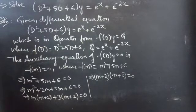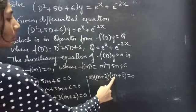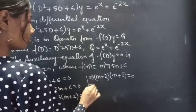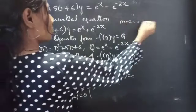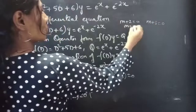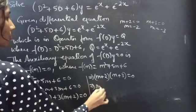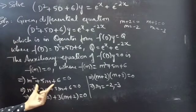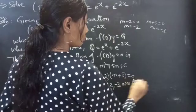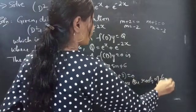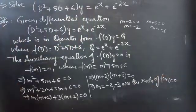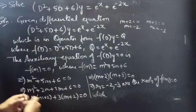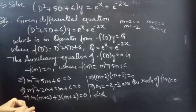Taking (m + 2) common gives (m + 2)(m + 3) = 0. Equating each factor to zero: m + 2 = 0 and m + 3 = 0, giving m = −2 and m = −3. These are the roots of the auxiliary equation f(m) = 0, and they are real and distinct — no repeated, complex, or irrational roots.